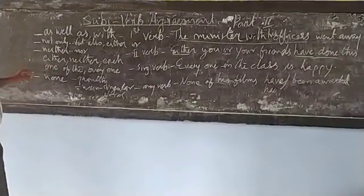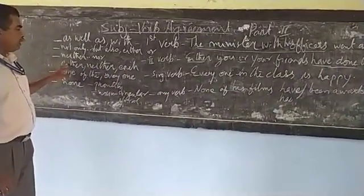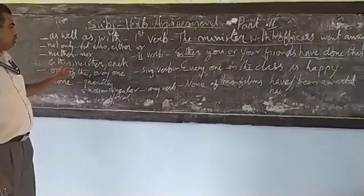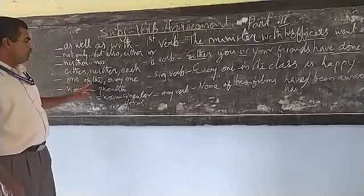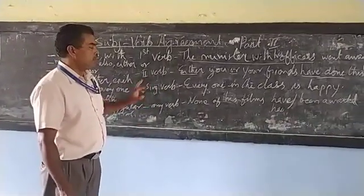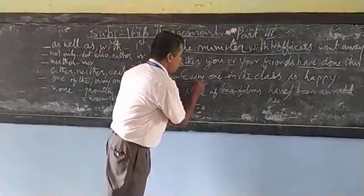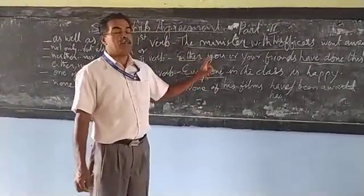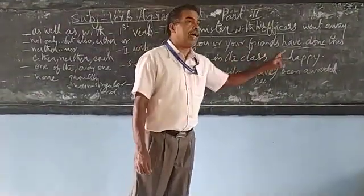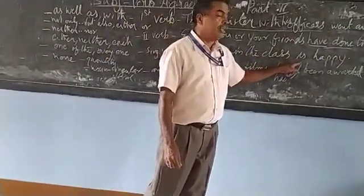Next: 'one of the,' 'everyone,' 'either,' 'neither,' 'each' — if any of these words form part of your subject, you have to use a singular verb. For example: 'Everyone in the class is happy.' Even if there are 60 students, when we use 'everyone' we are referring to all the students one by one, each after each. So we use a singular verb. We cannot say 'Everyone in the class are happy,' since the meaning is one by one — so we use a singular verb.